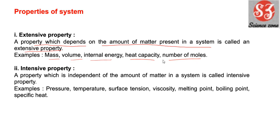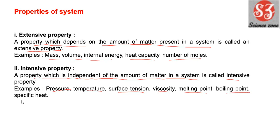Next है intensive property। Intensive property वो property है जो independent होती है from amount of matter in system — मतलब आपके system में कितना matter present है उससे इस property को कोई फर्क नहीं पड़ता। उसे कहेंगे intensive property, जैसे कि pressure, temperature, surface tension, viscosity, melting point, boiling point, specific heat। इन properties पर system में कितना matter present है उससे कोई फर्क नहीं पड़ता।